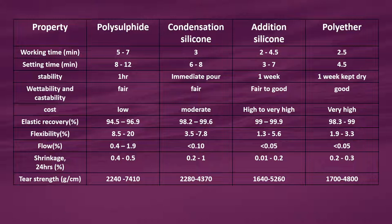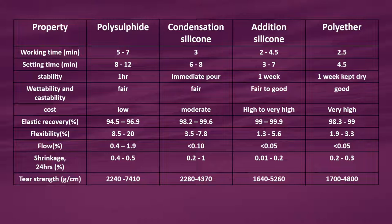Elastic recovery percentage: polysulphide 94.5-96.9%, condensation silicone 98.2-99.6%, addition silicone 99-99.9%, polyether 98.3-99%. Flexibility percent: polysulphide 8.5-20%, condensation silicone 3.5-7.8%, addition silicone 1.3-5.6%, polyether 1.9-3.3%. Flow percent: polysulphide 0.4-1.9%, condensation silicone less than 0.10%, addition silicone less than 0.05%, polyether less than 0.05%.